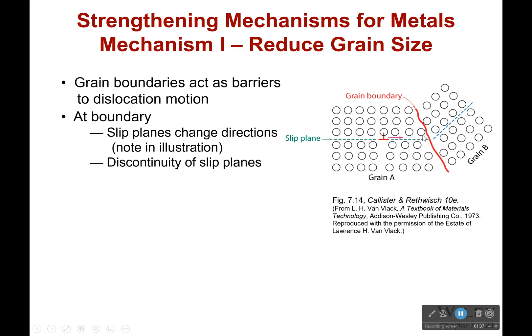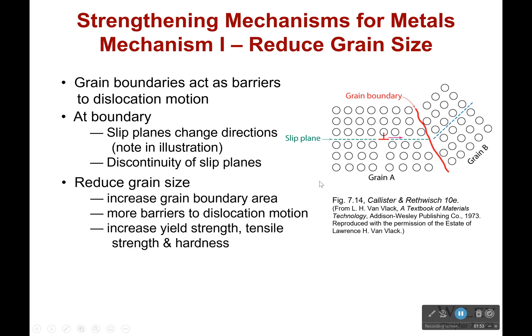The grains themselves can dislocate along these lines, but inside of a grain, if it's trying to dislocate and it runs into that grain boundary, it can't really move much more than that. This is because the slip plane changes direction when we cross the grain boundary. So if this grain just reached the critical resolved shear stress, the next one hasn't.